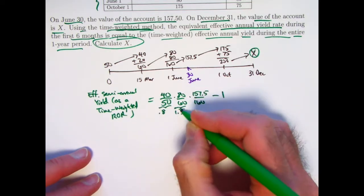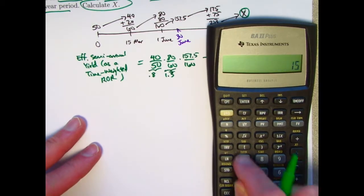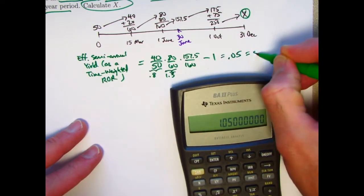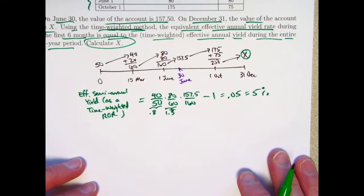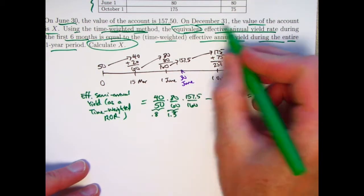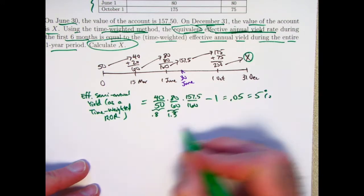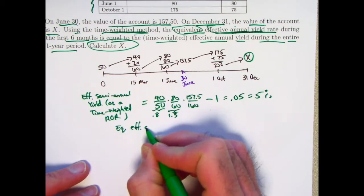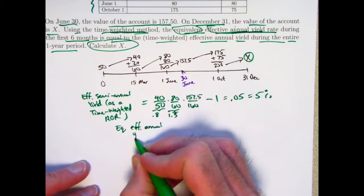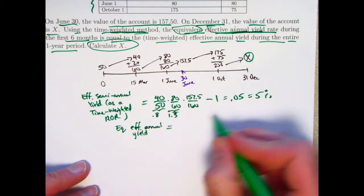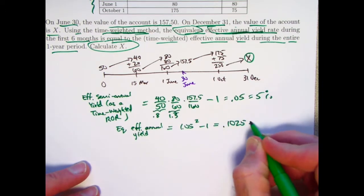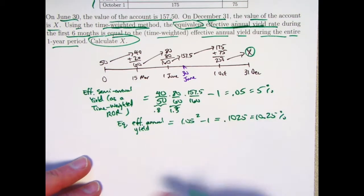Calculating: 157.5 divided by 160, times 1.3 repeating, times 0.8, minus 1 equals 0.05 — so 5%. That's the effective semi-annual yield rate according to the time-weighted rate of return. The corresponding equivalent effective annual yield rate is found by taking 1.05, squaring it, and subtracting 1. That gives 0.1025, or 10.25%. That is the equivalent effective annual yield.